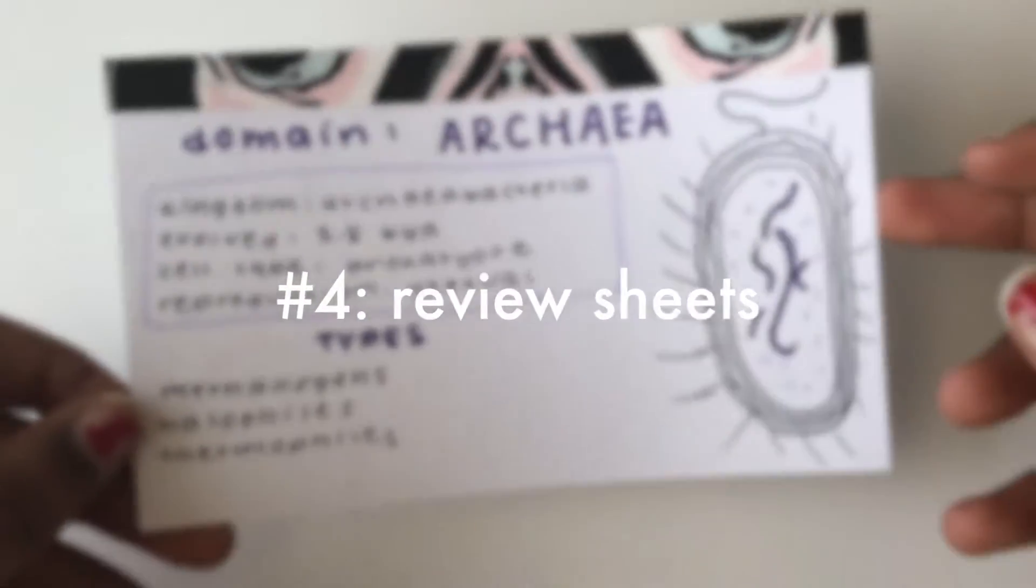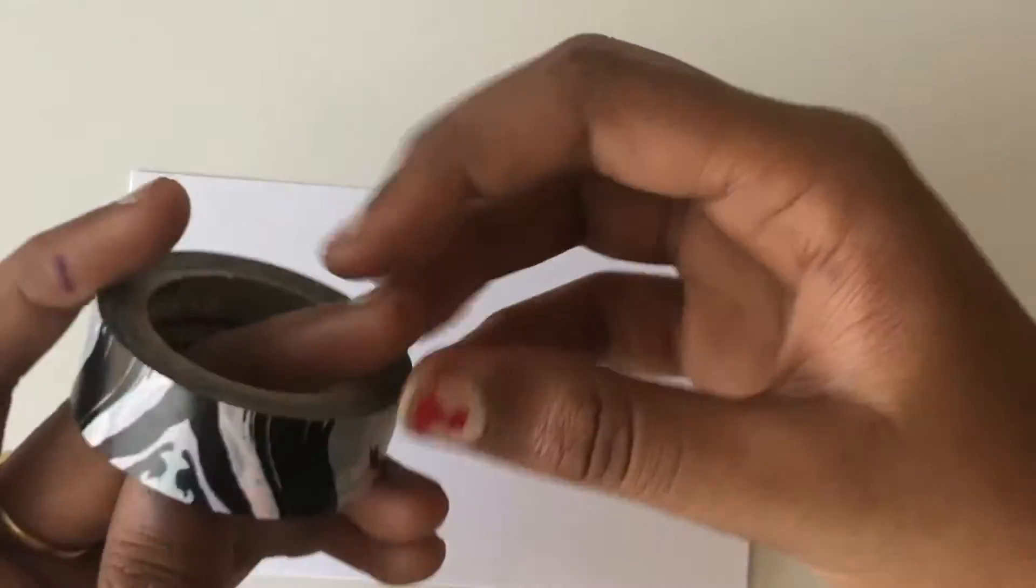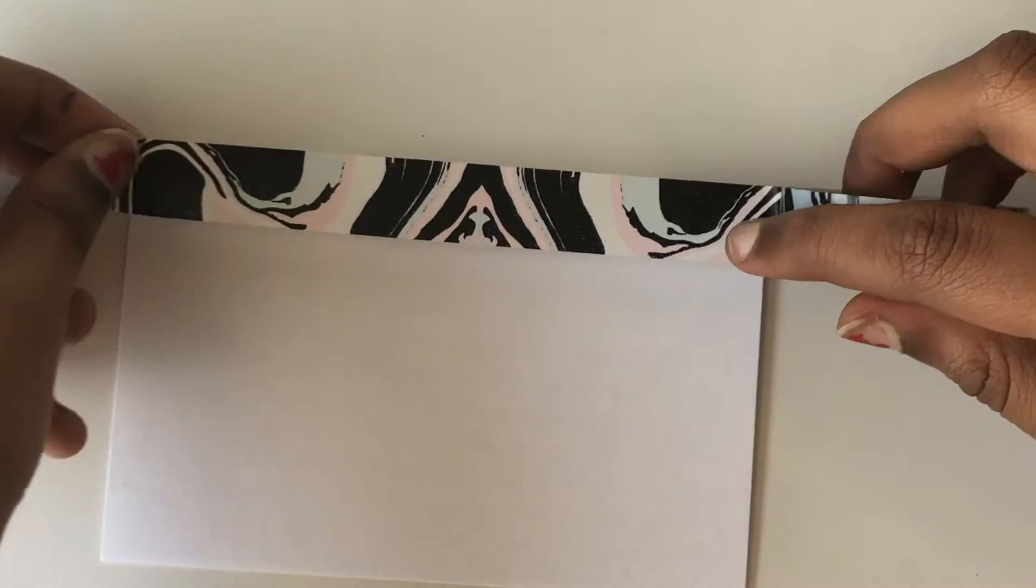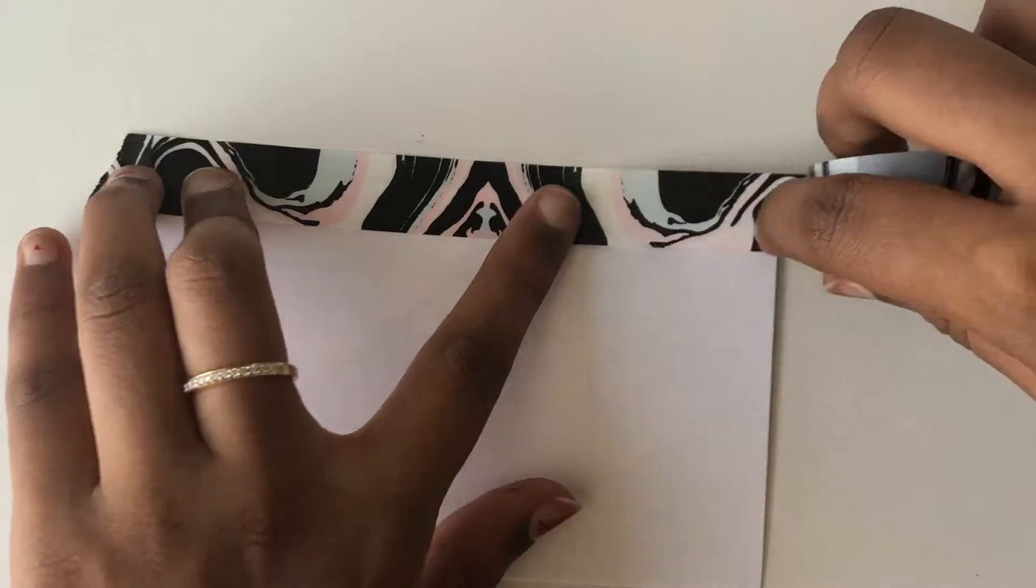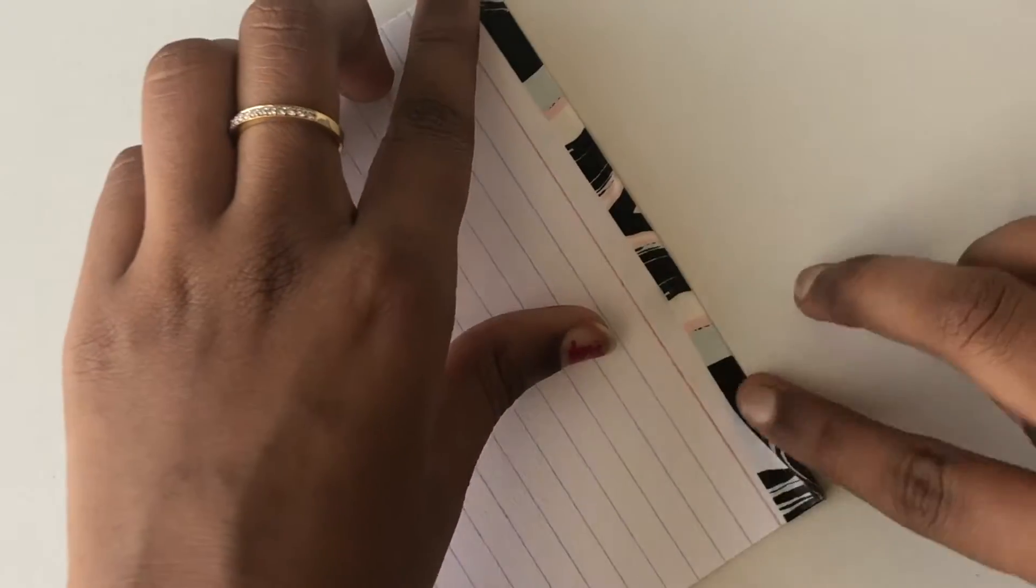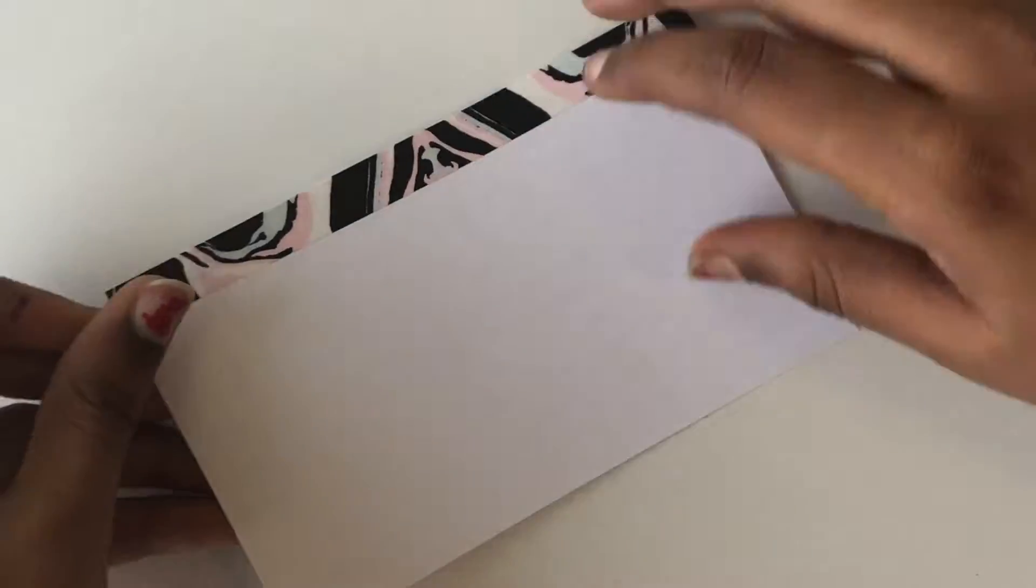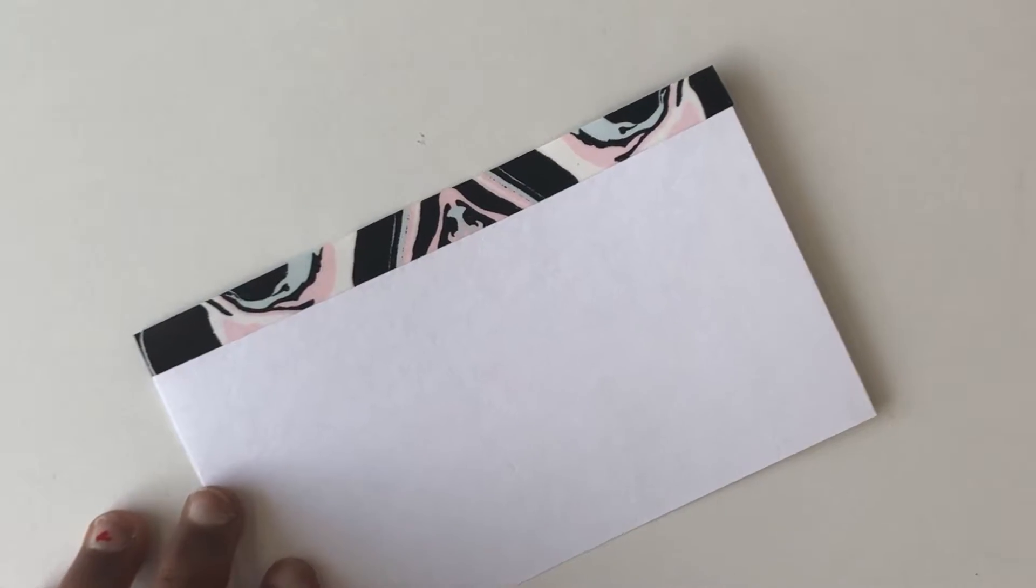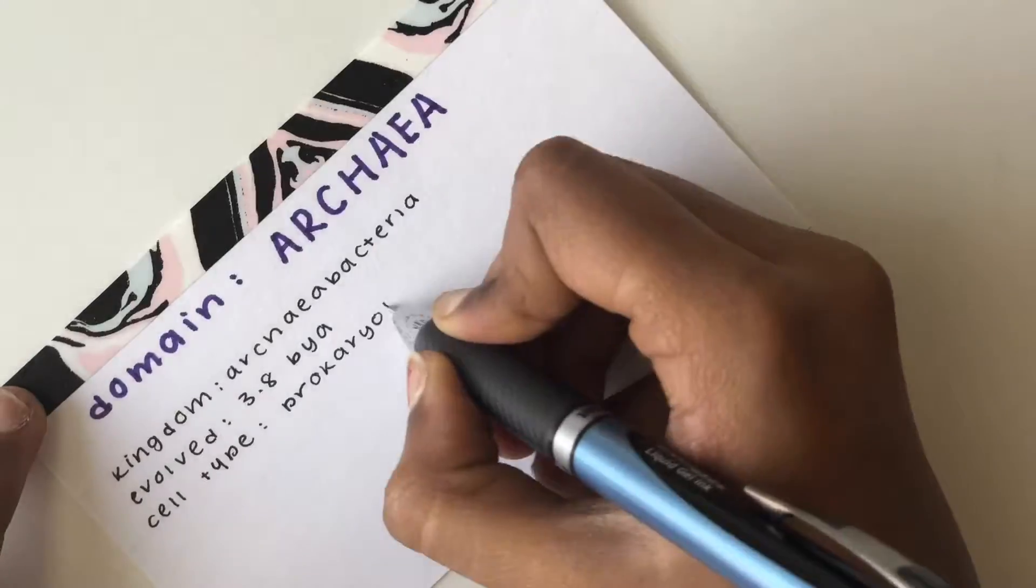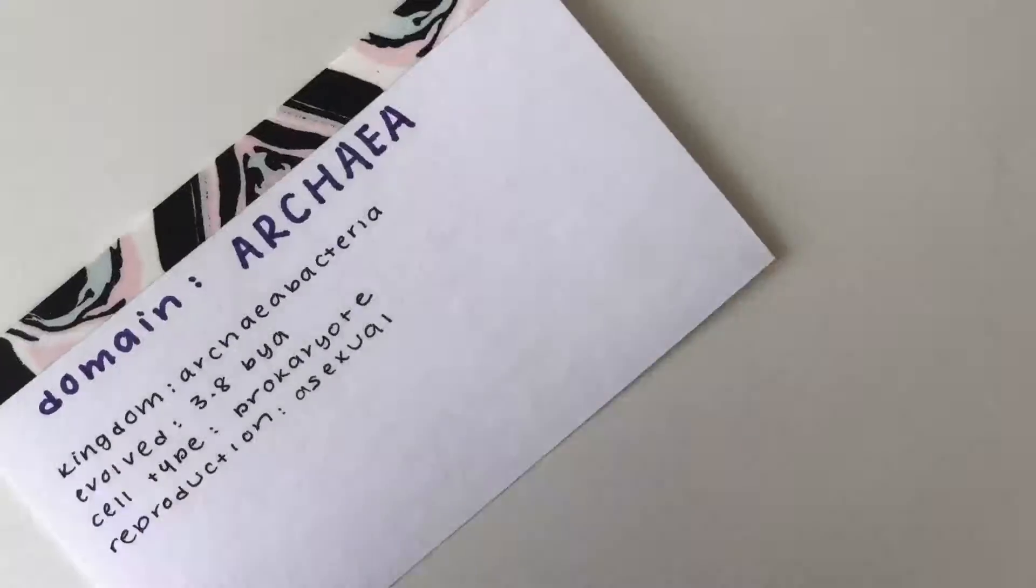Number four are review sheets. I'm starting off with washi tape to decorate these flash cards because I just think review sheets are really important and using this washi tape just makes it feel important to me. Basically these are just review sheets for your upcoming quizzes and tests. It's just a really good way to condense all your information and just really focus on the essentials and know what you should be studying.